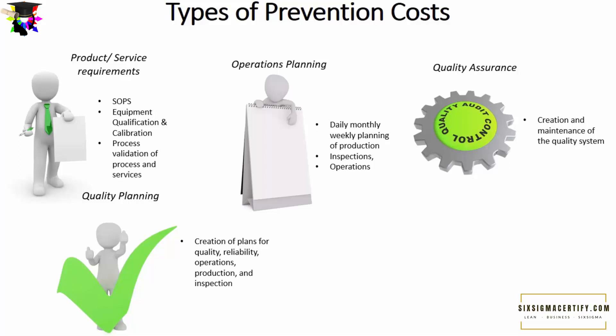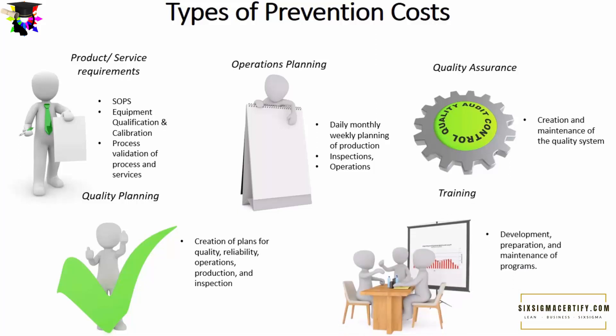The fourth type of prevention cost is training. Different kinds of costs are involved in training for the development, preparation, and maintenance of quality programs. Training may be in-house or the company may sponsor employees to receive training from external institutions. There is also induction training for newcomers to help them understand how the organization functions and the importance of following standard operating procedures.